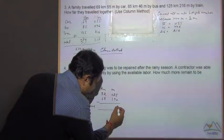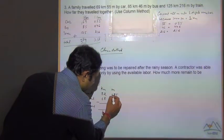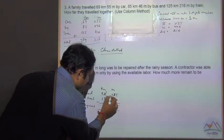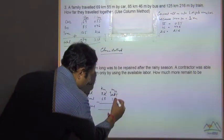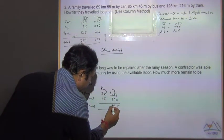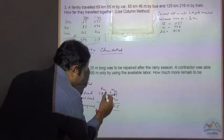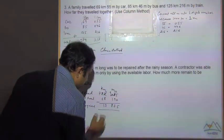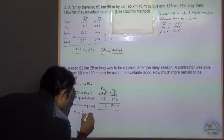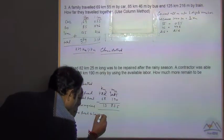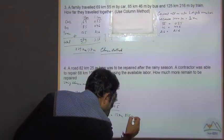5 minus 0, 5. 2 carry over. 0 cannot, so 0 carry over. This 1, 10, 9, 12. 12 minus 9, 3. 9 minus 1, 8. 1, no, 7, 11. 11 minus 8, 3. 7 minus 6, 1. So road more, road to be repaired is equal to 13 kilometer and 835 meter.